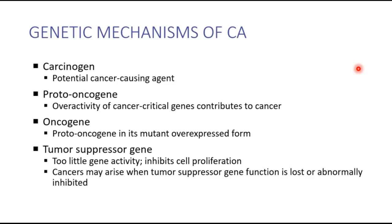A carcinogen is something that can potentially cause cancer — something that could potentially mutate the genome. A toxin, radiation, or a virus can potentially alter the genome, knocking out a nucleotide and causing things like frameshift mutations. Proto-oncogenes and tumor suppressor genes are things we all physiologically have right now and they are working. All of these are genetically determined things — genes that express proteins.